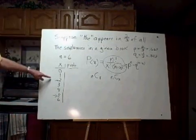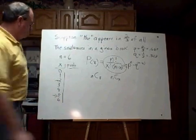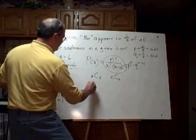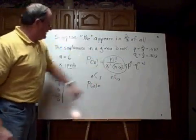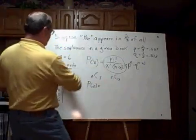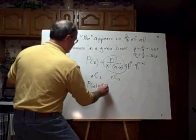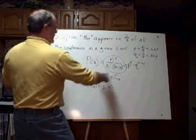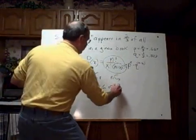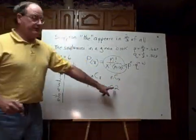I want the probability that we have two successes. So I want the probability of two. Well, that's going to be equal to N, C, X, which is N is six. N, C, R, and X is two. So that's exactly what we enter on the calculator.